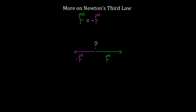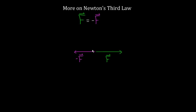And the answer is no. The reason it's no is because these two forces are exerted on different objects. So the reason this statement of Newton's third law is still a little bit too vague is because this is really about forces on different objects. If this is the force on object A exerted by object B, then this force over here has to be the force on object B exerted by object A.